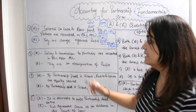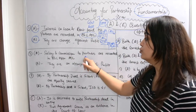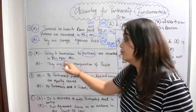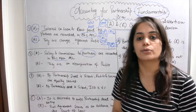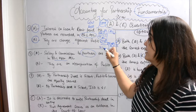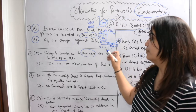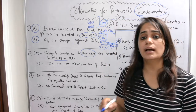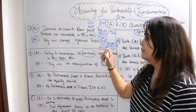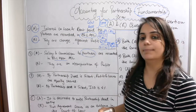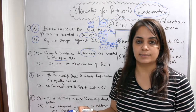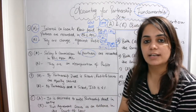Question two: Assertion — salary and commission to partners are recorded in the P&L appropriation account. That is very true. Salary and commission go to P&L appropriation. The net profit is first saved after deducting interest on loan and rent paid, and then that net profit is distributed via salary and commission to partners.